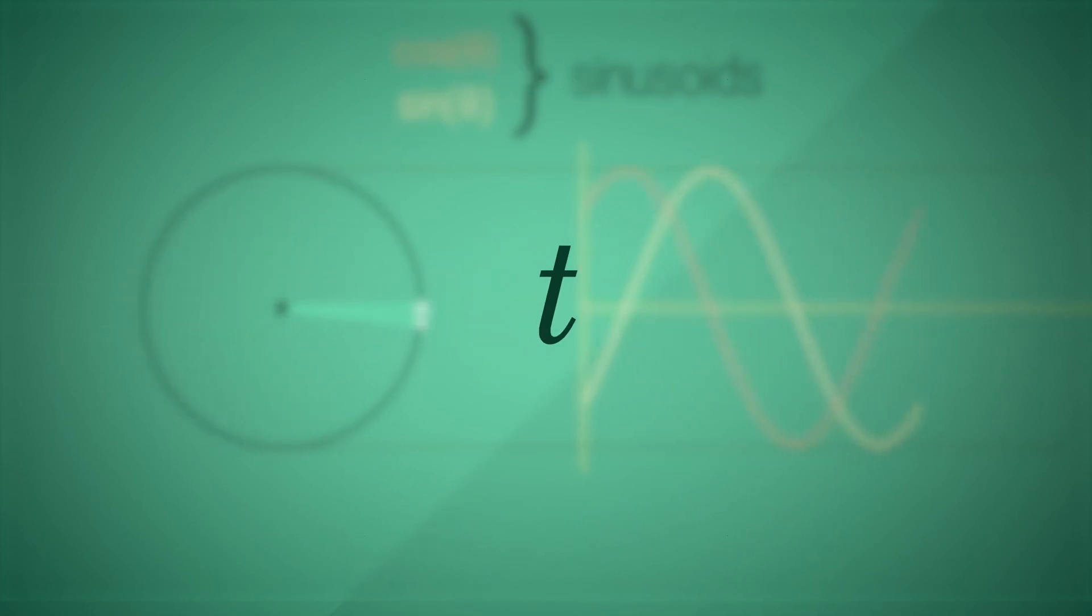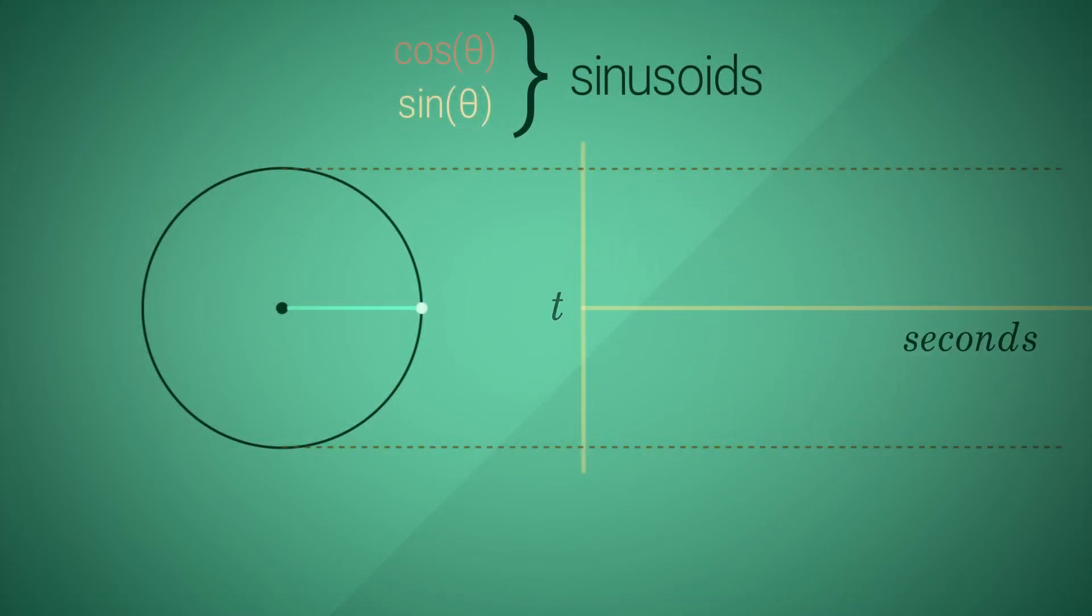So on the x axis, instead of the angle theta, we have seconds as a unit of time. It's a relative time box, where it starts from time of zero, and it stretches on forever. And on the y axis is the value of the sine function over time.